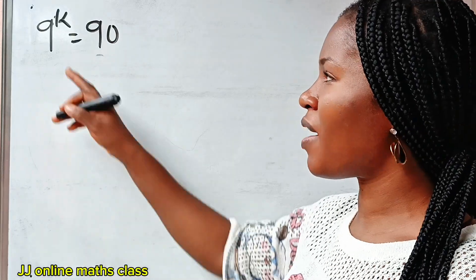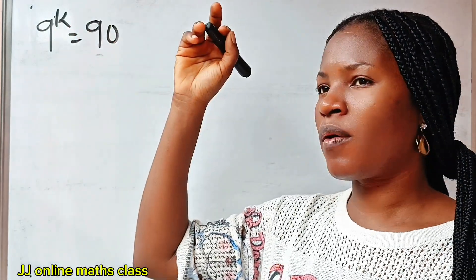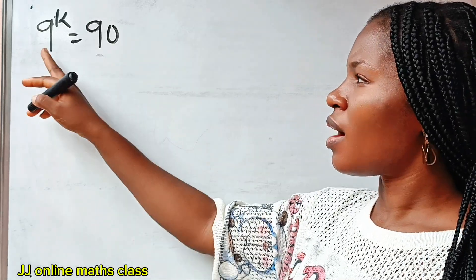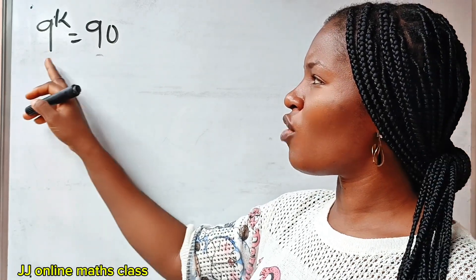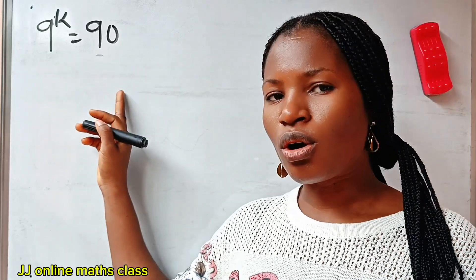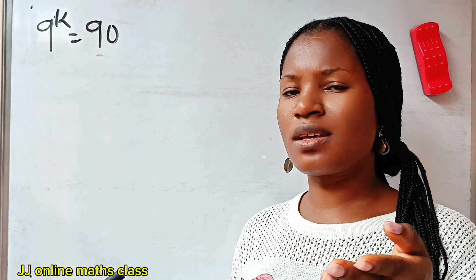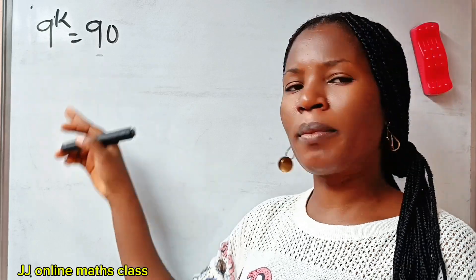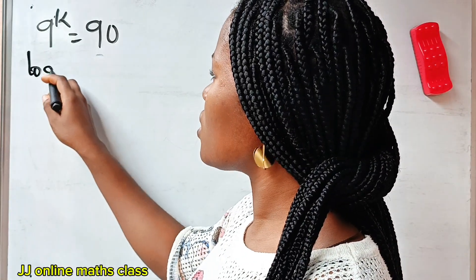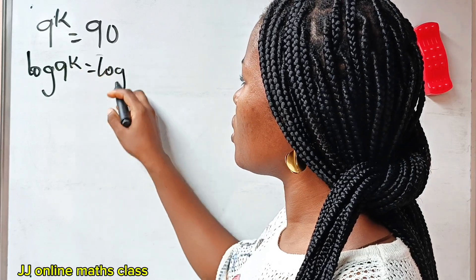Hi, wonderful friends. Let's find the value of K. Since what we are looking for is the power, the only way to get its value is to take the log to base 10 of both sides of this equation, or to take natural log of both sides. But I will go for log to base 10 since this is just a normal number. So I will introduce log to base 10 to both sides of the equation.